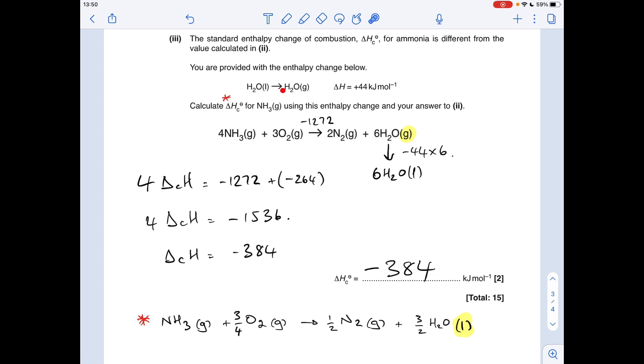The value we've got is to go liquid to gas, so if we go gas to liquid it's going to be minus 44. That's kilojoules per mole, so the six moles of H2O go from gas to liquid, so it's minus 44 times six.